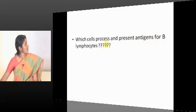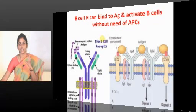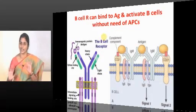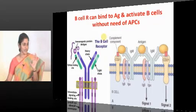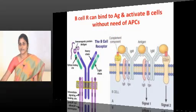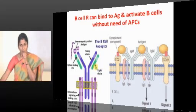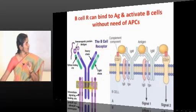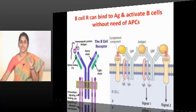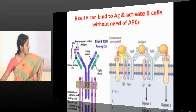Which cells process and present antigens for B lymphocytes? B lymphocytes can take up antigen by themselves — they don't need antigen presenting cells. You can see B lymphocytes having a surface IgM. The CD21 molecule is also called complement receptor 2, and it is a receptor for EBV. That is why Epstein-Barr virus preferentially affects B lymphocytes, resulting in B cell lymphomas and related conditions.